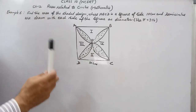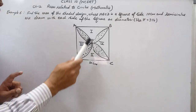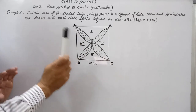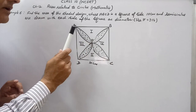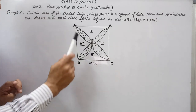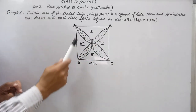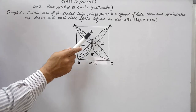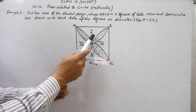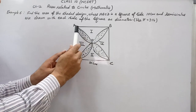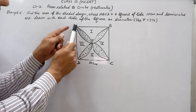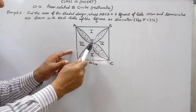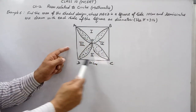To summarize the approach: we find the area of unshaded parts 1, 2, 3, 4, add them together, then subtract from the area of the square to get the shaded area. For finding area 1 plus 2, we subtract the area of semicircle AOD plus the area of semicircle BOC from the area of the square.